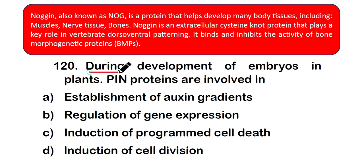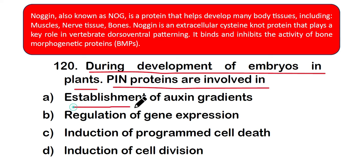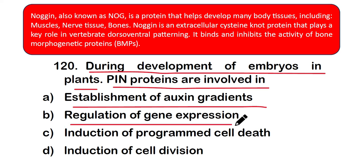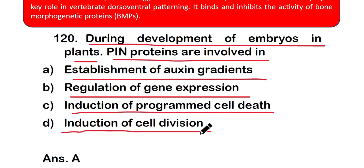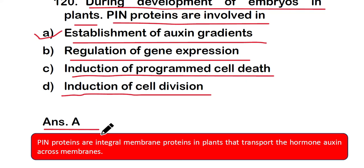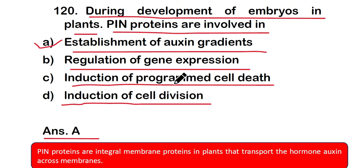Question 120: During development of embryos in plants, SPIN protein is involved in: (a) establishment of oxygen gradients, (b) regulation of gene expression, (c) induction of programmed cell death, or (d) induction of cell division. The correct answer is option A — establishment of oxygen gradients. SPIN proteins are integral membrane proteins in plants that transport the hormone auxin across the membrane. These are all 20 questions of Part 6 on developmental biology — thank you for watching.